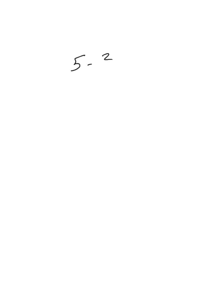Let's look at another example. So let's say I'm doing five minus two-thirds. Again, I'm going to set this up vertically — my whole number is going to go on the left, my fraction is going to go on the right. I'm trying to take two-thirds away from nothing in the fraction column, so I'm going to have to do some regrouping.